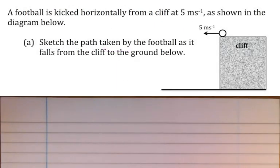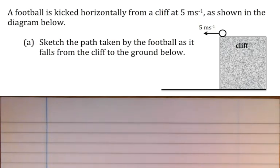Here's the question: a football is kicked horizontally from a cliff at five meters per second as shown in the diagram. Sketch the path taken by the football as it falls from the cliff to the ground. You don't need a calculator for this one — just pen and paper. I'm going to find the diagram showing the actual answer once I've given you a second to think.